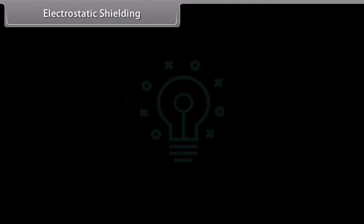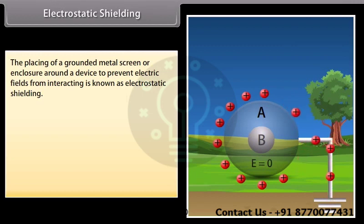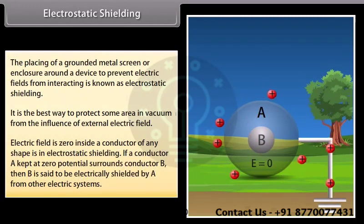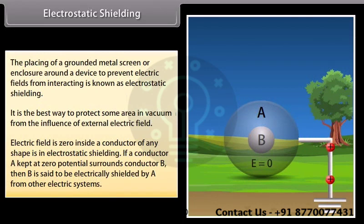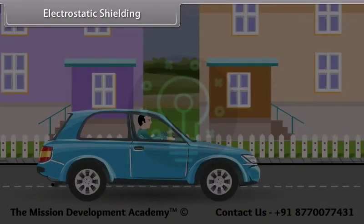Electrostatic shielding: Placing a grounded metal screen or enclosure around a device to prevent electric fields from interacting is known as electrostatic shielding. It is the best way to protect an area from the influence of external electric fields. The electric field is zero inside a conductor of any shape. If conductor A, kept at zero potential, surrounds conductor B, then B is electrically shielded by A. For example, in a thunderstorm with lightning, it is safer to be inside a bus or car than near a tree or open ground.